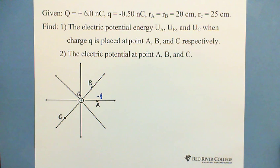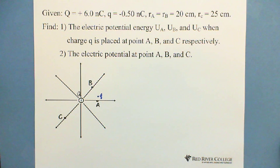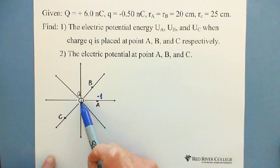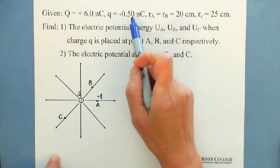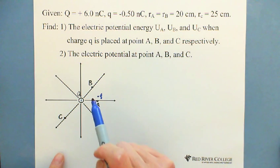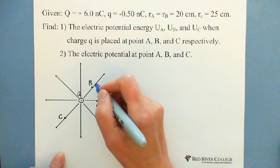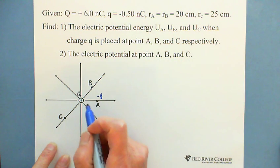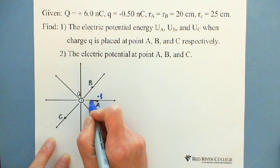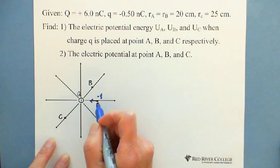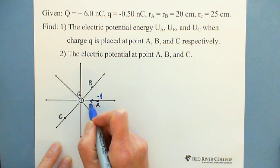Let's first try the first part. Talking about electric potential energy — we know energy is related to work. When the negative small q of 0.5 nC is moved from an infinite place and brought into this electric field produced by big Q, because it's a negative small charge, the electric field force is attraction. When you move from outside to inside the electric field, the force is attractive because one is negative and one is positive — they attract each other.